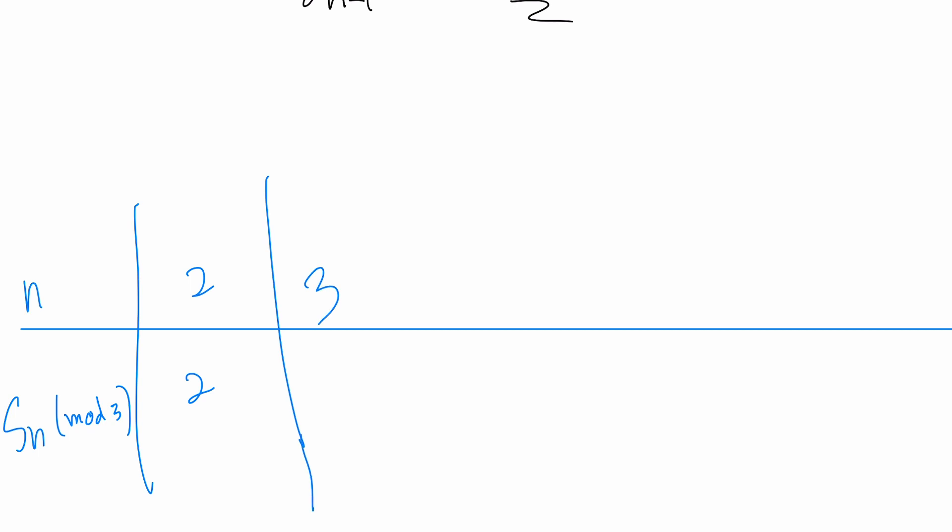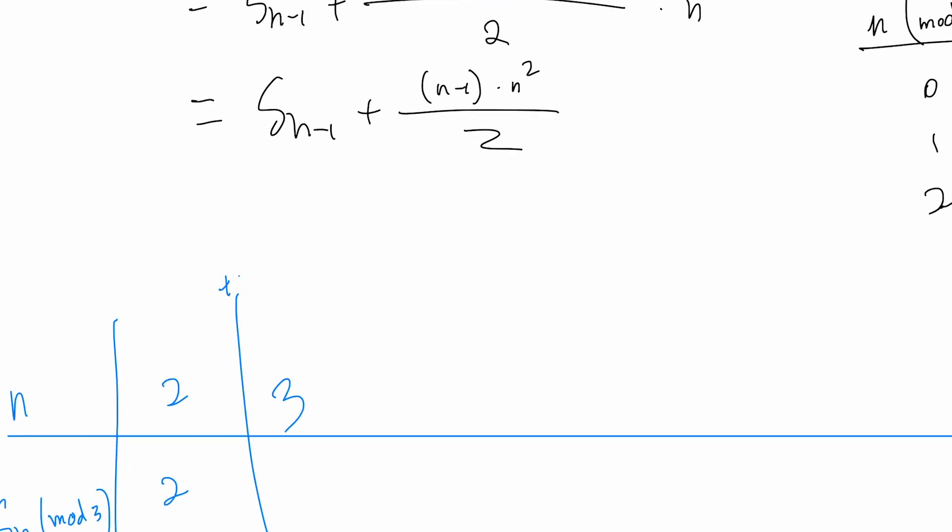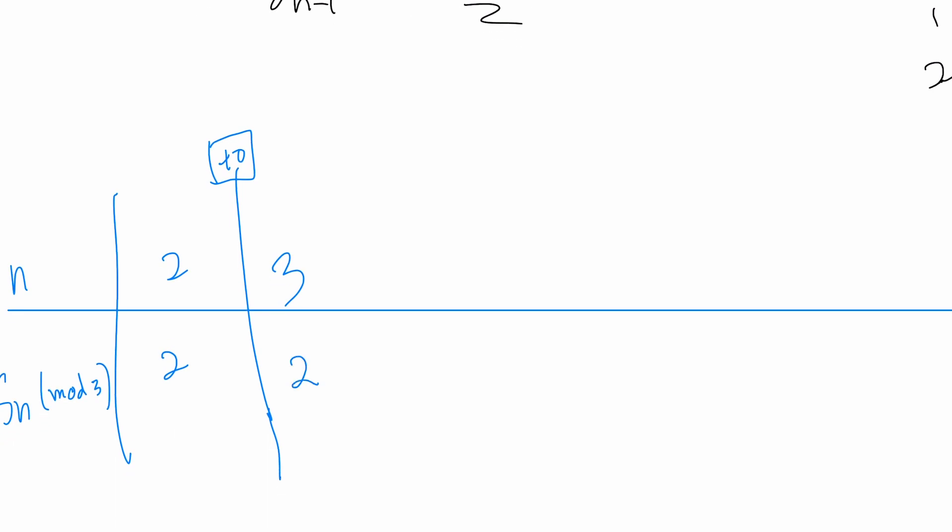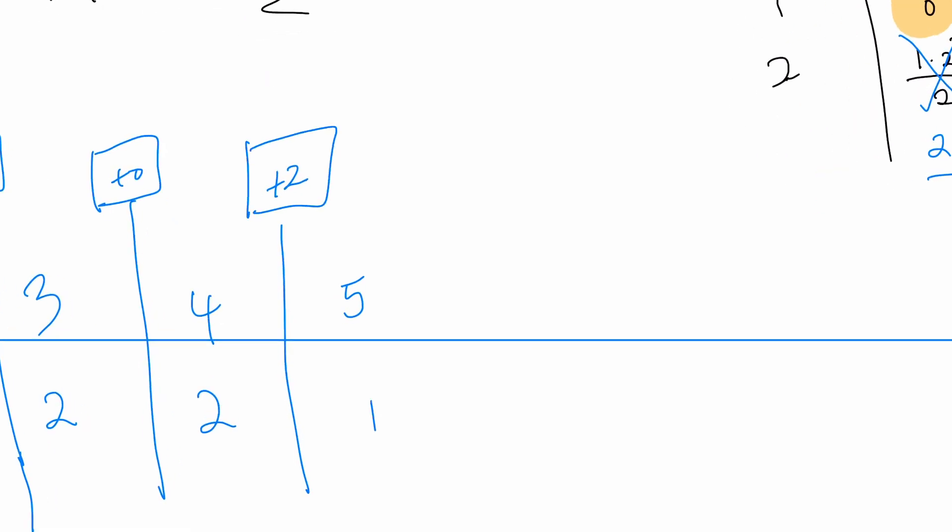If we have 3, then we add this thing. 3 is 0 mod 3, which means we add 0, so this is still 2. If we have 4, we add 0 again, get 2 again. If we have 5, we add 2 because it's 2 mod 3. So if we add 2, that becomes 1, because 2 + 2 = 4, and 4 divided by 3 has remainder 1.